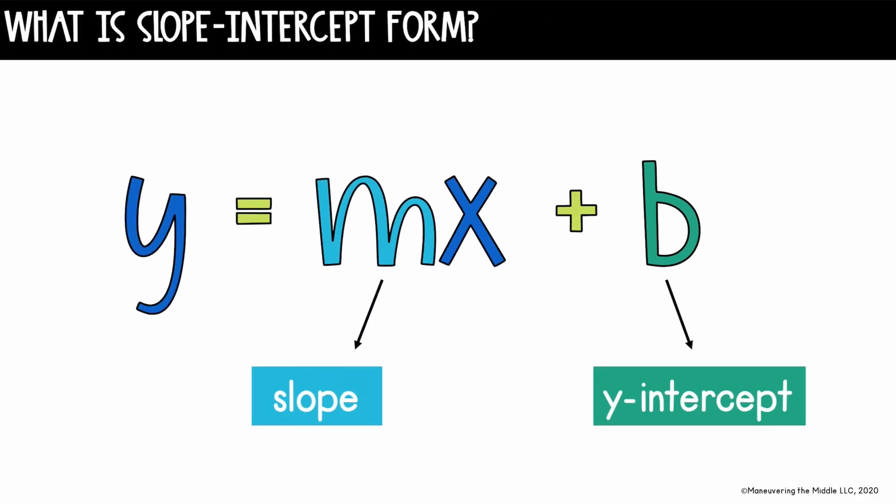Slope-intercept form is this equation that says y equals mx plus b. It's important to know that slope-intercept form can be used to describe any relationship that is linear. So anything that when graphed would be a line is a linear relationship and can be represented by y equals mx plus b.